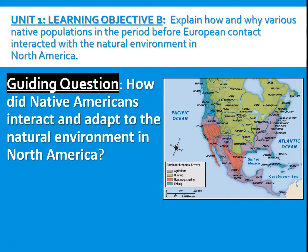We've now gone through all the different regions of North America, discussing the natural environment in each area and how Native Americans adapted to those conditions — and how those adaptations shaped their culture and society. This is the situation in North America prior to European intervention. We'll look at European involvement in North American territories in the next video.